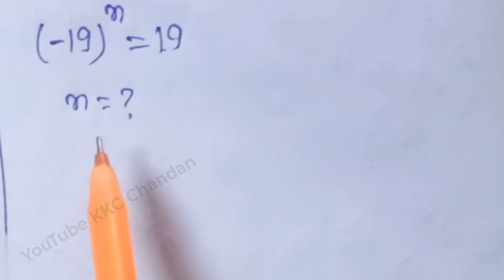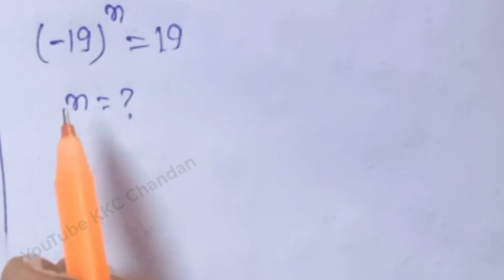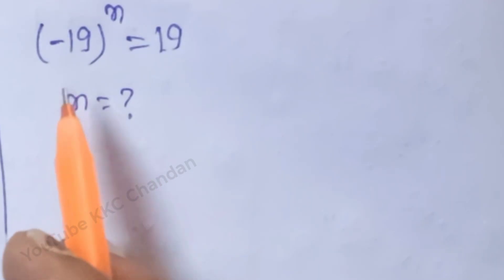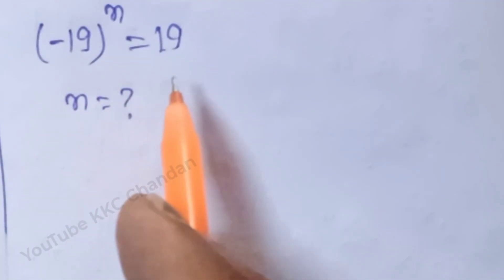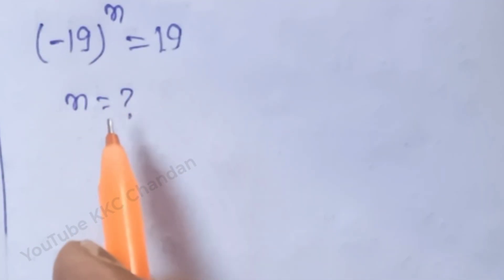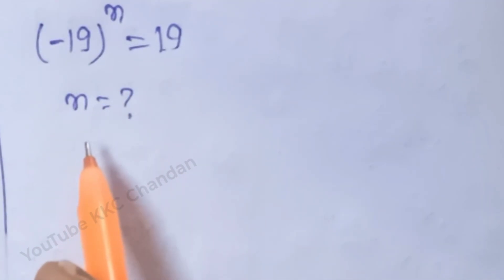How to solve this problem? Let me start here. The question states that (n - 19)^n is equal to 19. We want to find the value of n.